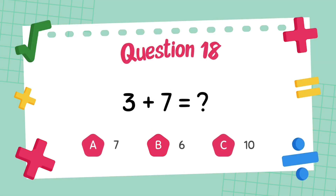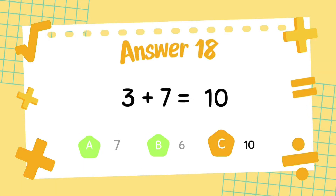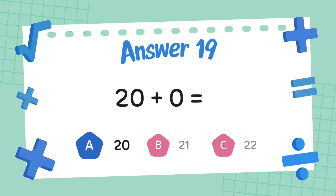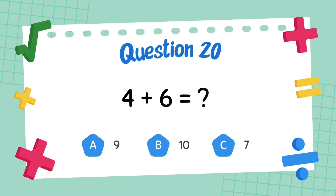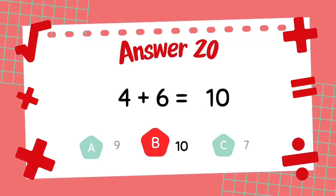What is 3 plus 7? The answer is 10. What is 20 plus 0? The answer is 20. What is 4 plus 6? The answer is 10.